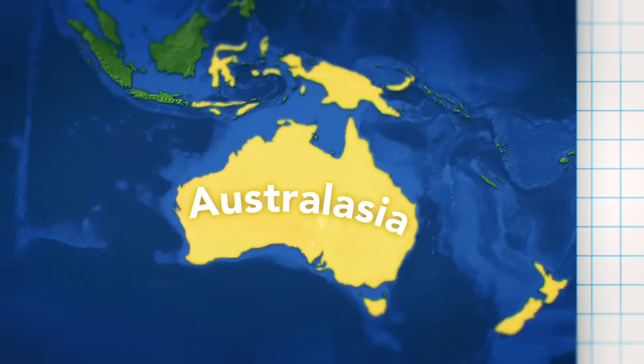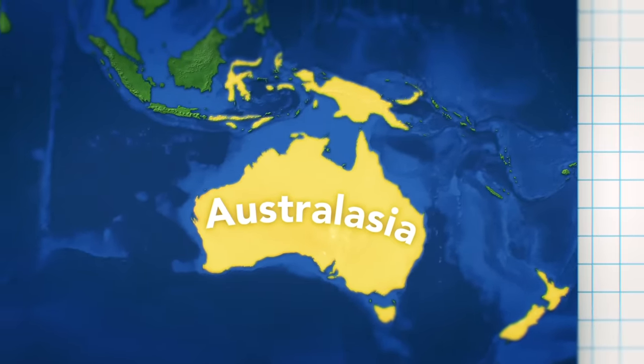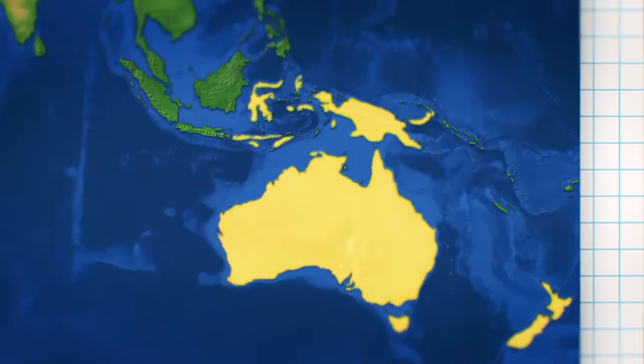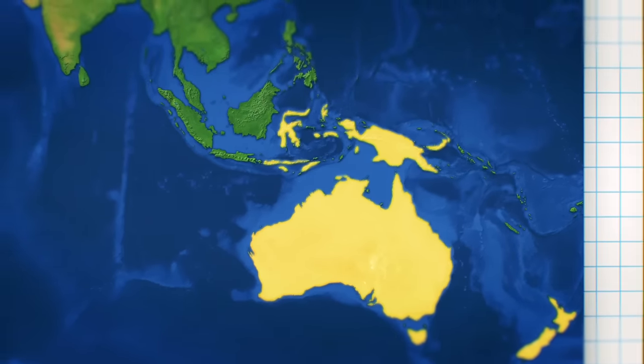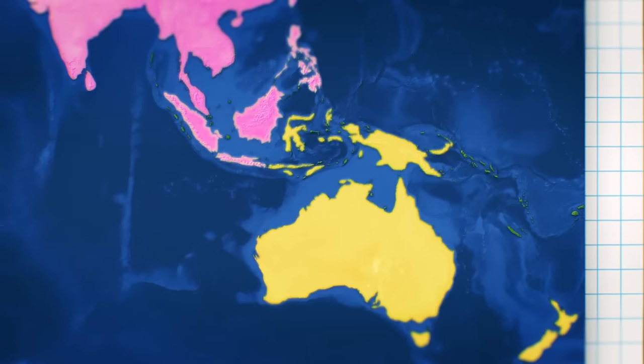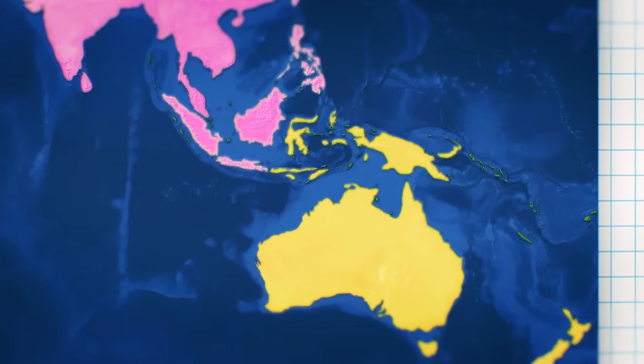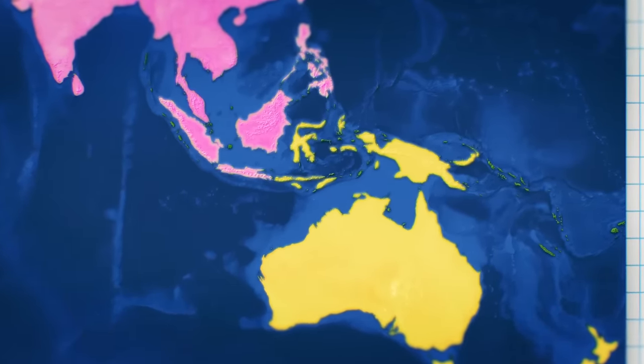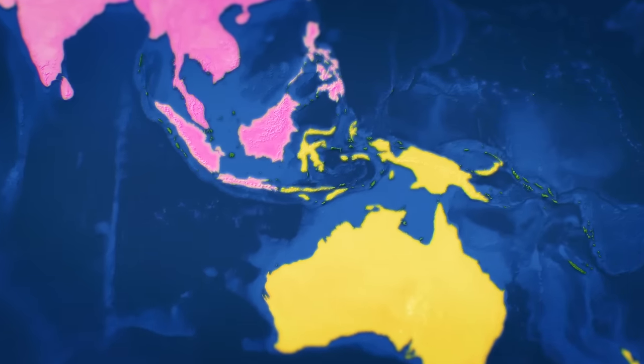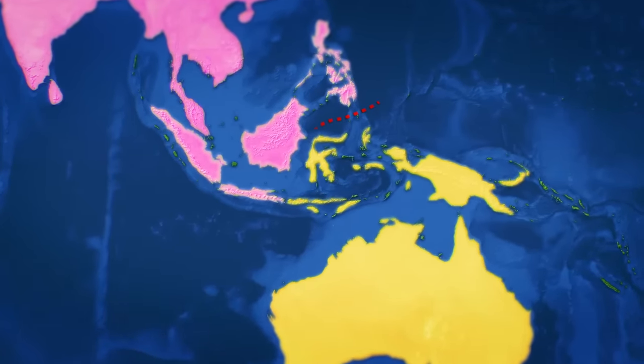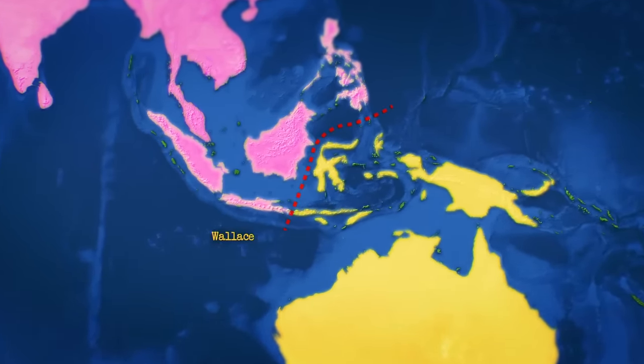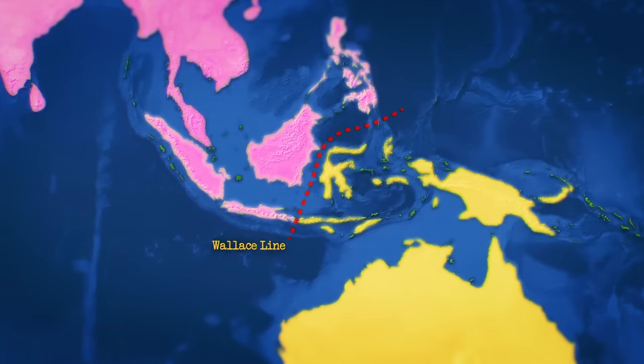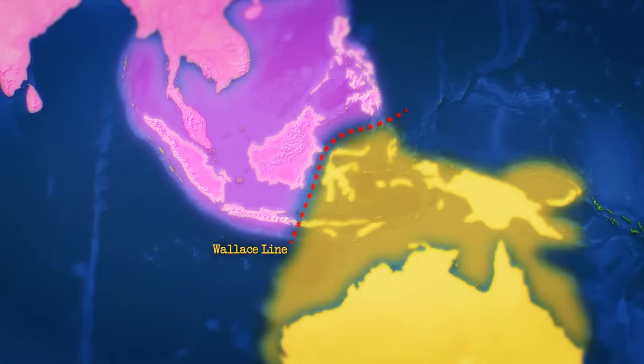But, as these landmasses pushed further and further north, they eventually came into close proximity with the Indonesian islands, and by extension, the Indo-Malayan realm. So, despite on a surface level appearing to be part of the same archipelago, there are in fact two distinct groups of islands here, separated by every biogeographer's favorite line, the Wallace line, defining the border between Indo-Malaya and Australasia.